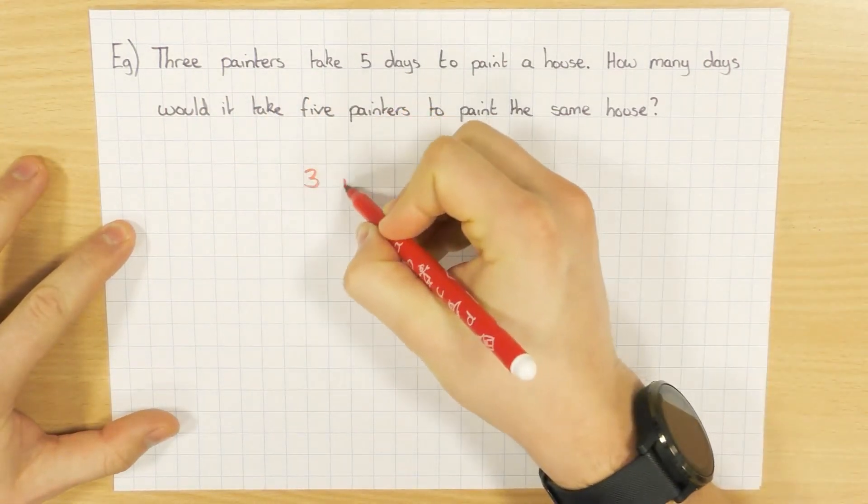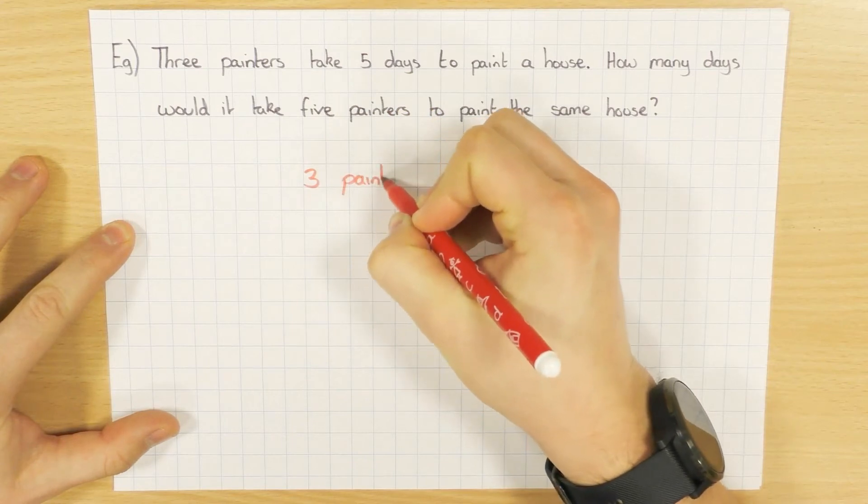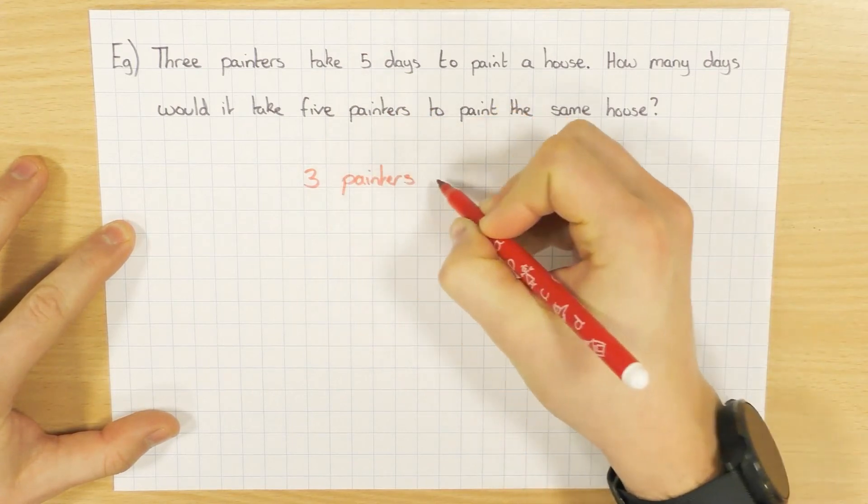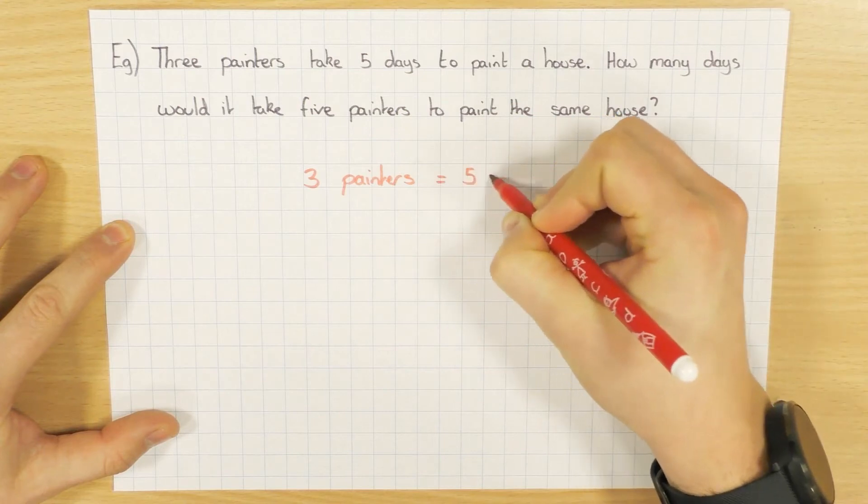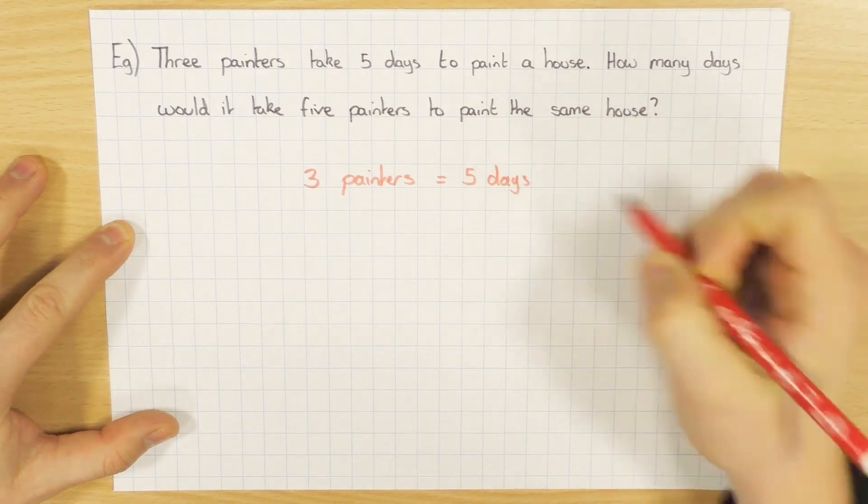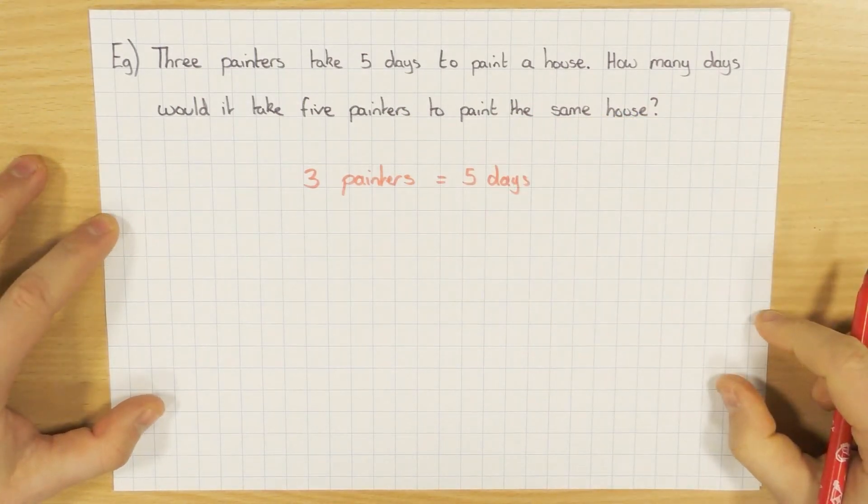So three painters take five days to paint a house. That's our first step. So three painters take five days to paint a house. How many days would it take five painters to paint the same house?